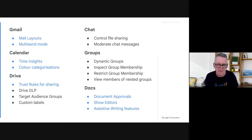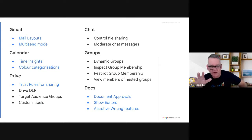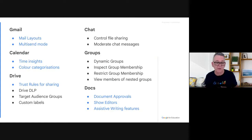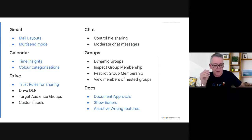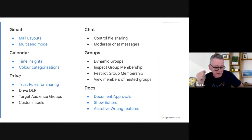In Gmail we have a thing called Mail Layouts, which lets you do fancy templated emails. If you've used something like Mailchimp, it's a similar kind of thing where you have pretty email formats. We couple that with another new plus feature called Multi-Send Mode. Multi-Send Mode lets you take an email going to a bunch of different people — in CC, BCC, or the To field — and instead of sending one email to 50 people, it will send 50 individual emails to each person.